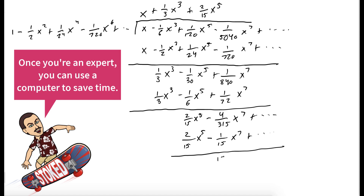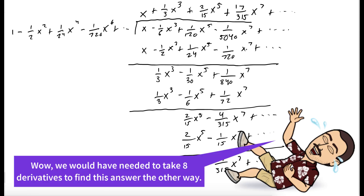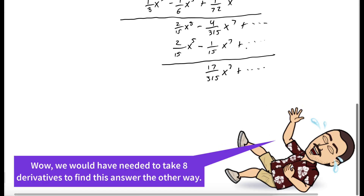We're left with seventeen three-hundred-fifteenths x to the seventh plus some higher terms. How many times does one go into seventeen three-hundred-fifteenths x to the seventh? That's seventeen three-hundred-fifteenths x to the seventh. This is our Maclaurin series for tangent of x.